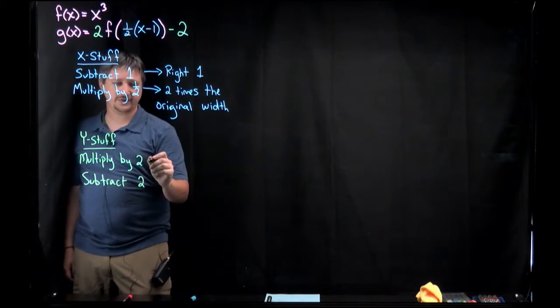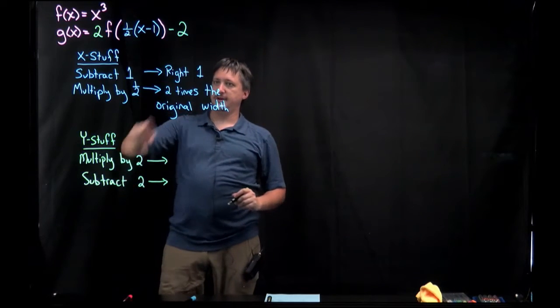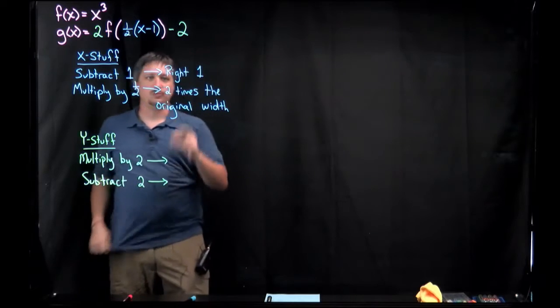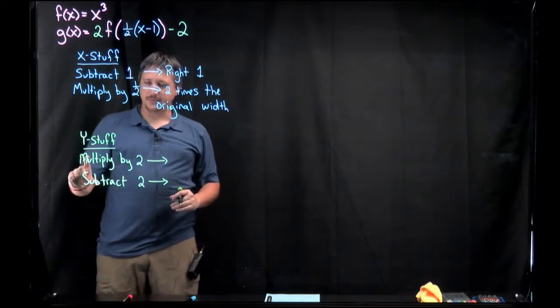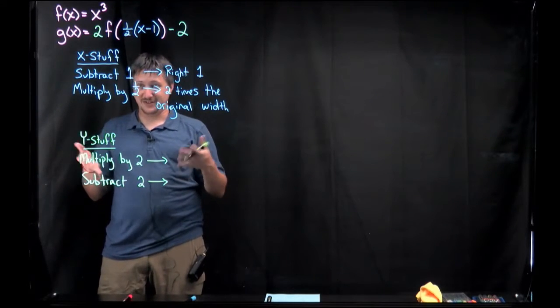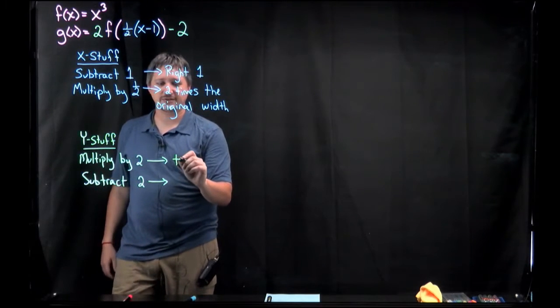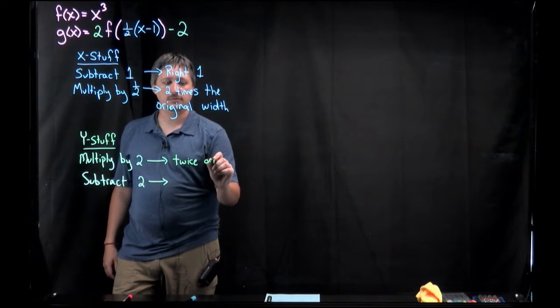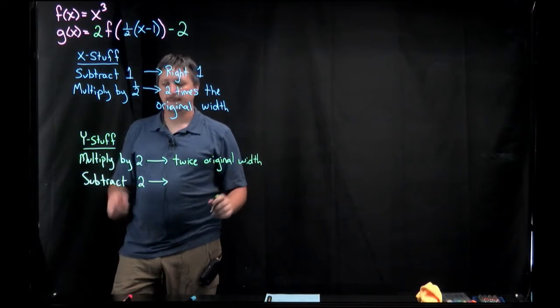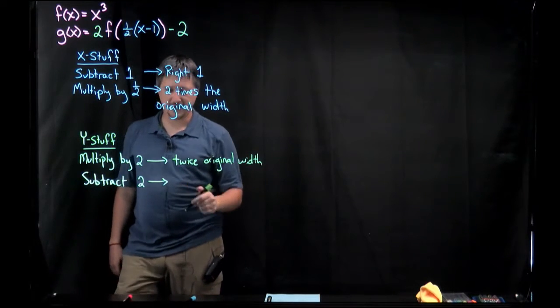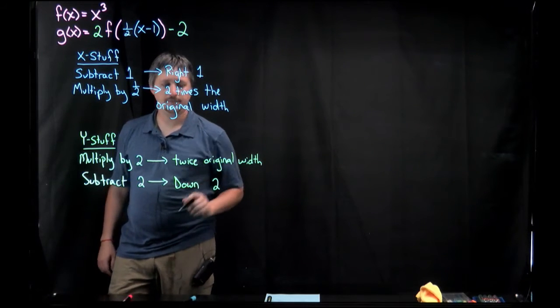And just like we did up here, we're going to translate these into what they are. So here I did it in terms of the right 1, 2 times original width, like the translation and transformation. We're going to do the same thing down here. So multiplying by 2, remember, y stuff actually behaves the way we think. So multiplying by 2, this is going to make it twice original height. And subtracting 2, that does indeed go down like we would think. So down 2.